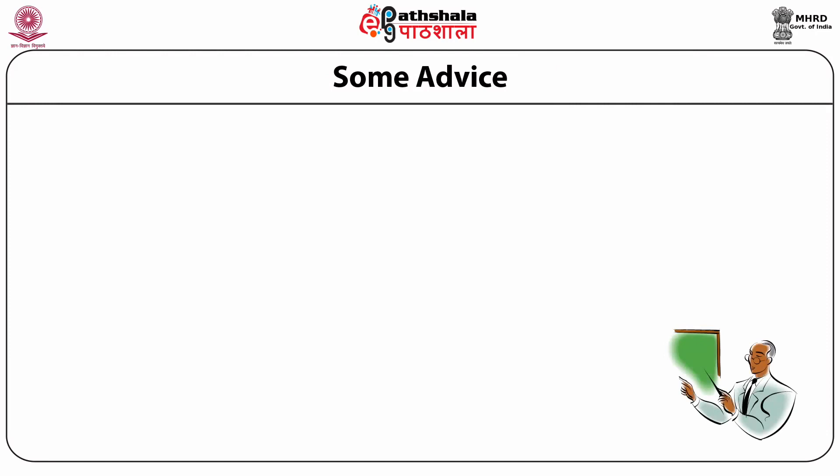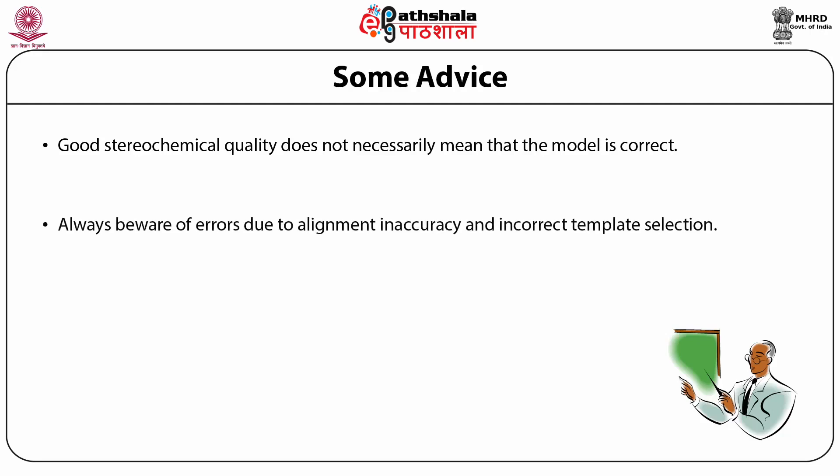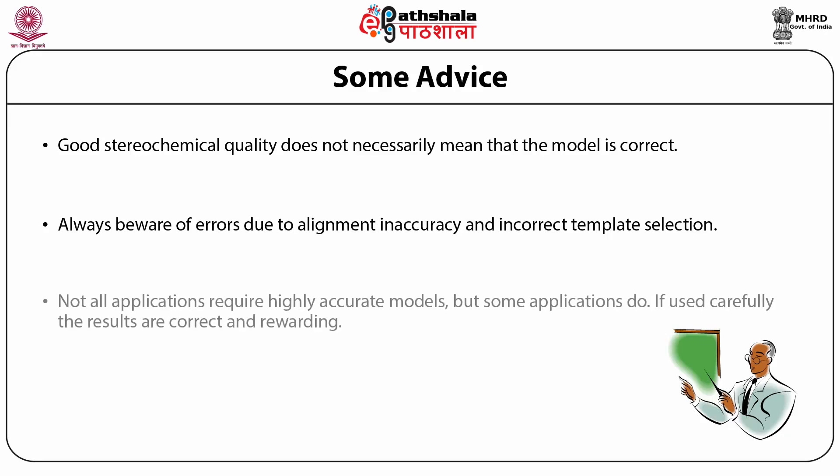Finally, some important advice: good stereochemical quality does not mean the model is correct. If you have a wrong template choice or a seriously wrong alignment, it doesn't matter how good the stereochemistry is — your model might be absolutely wrong. One has to be absolutely careful about alignment inaccuracies and errors of template selection. Not every application requires a highly accurate model, but some do. So keep in mind the purpose for which you are using the homology model — given the question, you might get away with a fairly rough model, but sometimes you need a really accurate one.